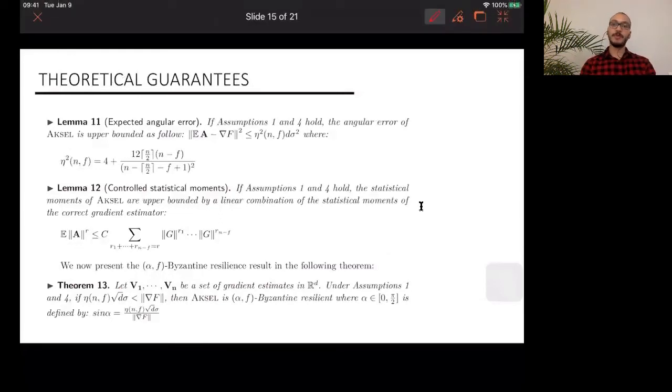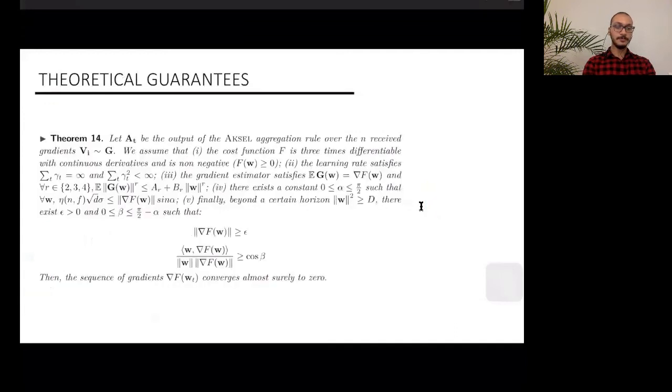The first thing to do was to upper bound the variance of Axel, which was done in lemma 11. All the theorems coming next are based on this upper bound result. For example, if we combine this result with lemma 12 on the controlled statistical moments, we are able to prove the alpha F Byzantine resilience of Axel. Let me talk about this a little bit. We say that an aggregation rule is alpha F Byzantine resilient if it can tolerate a maximum of F malicious workers. Suppose your output is this: this is your function, this is the true gradient, and this is Axel output, for example. Your aggregation rule is alpha F Byzantine if it has an angle alpha with the true gradient. Naturally we want this angle to be as small as possible, even zero if you can do it.